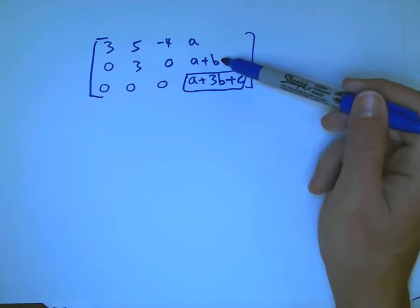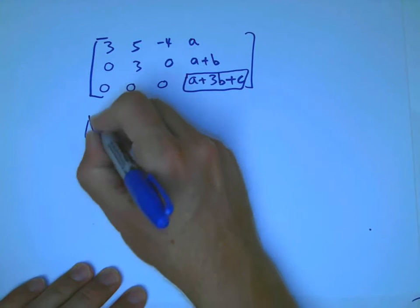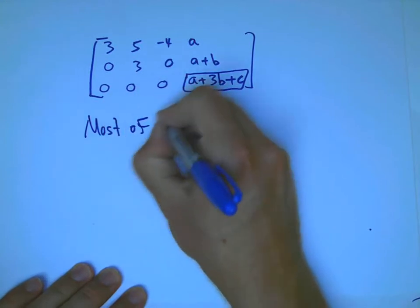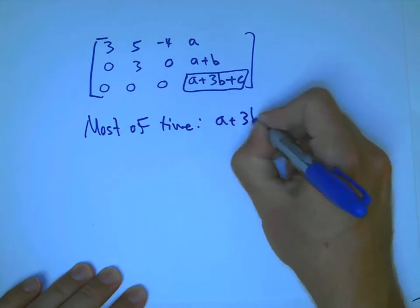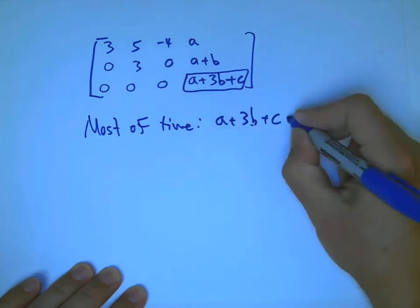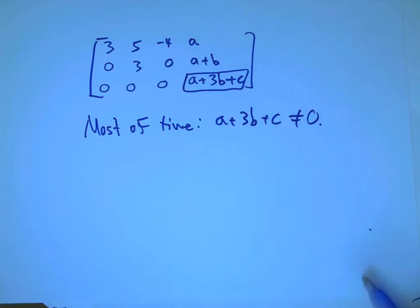And x1, x2, and x3 are going to be something in terms of a, b, and c. Actually, just a and b, as it turns out. But most of the time, if I pick a random a, b, and c, a plus 3b plus c is not equal to 0. And so most of the time, I won't be able to solve this at all.